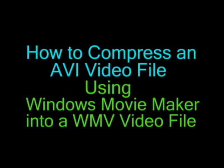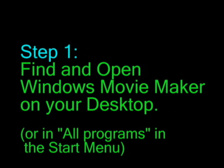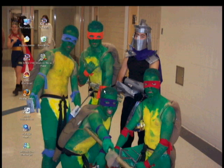Welcome to this tutorial which will show you how to compress an AVI video file using Windows Movie Maker into a WMV video file. Step 1: Find and open Windows Movie Maker on your desktop or in All Programs in the Start menu.